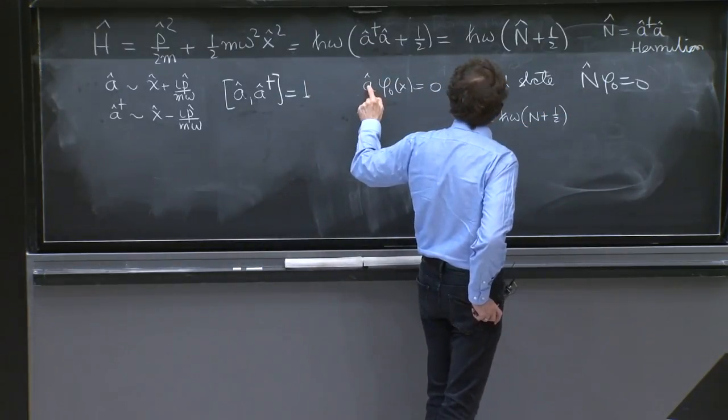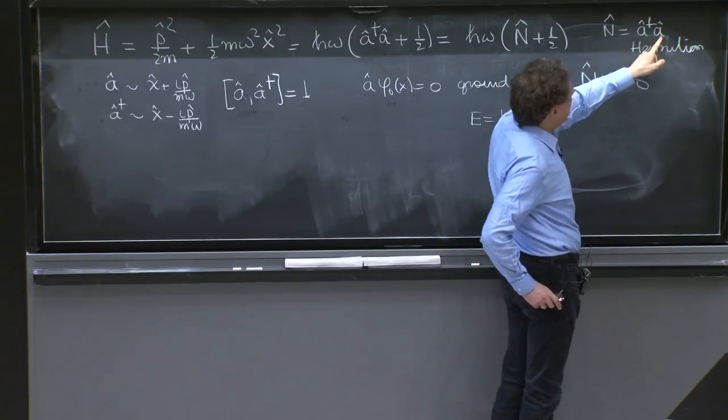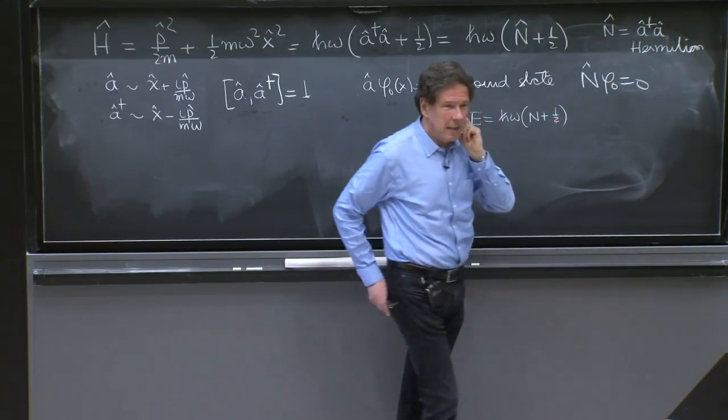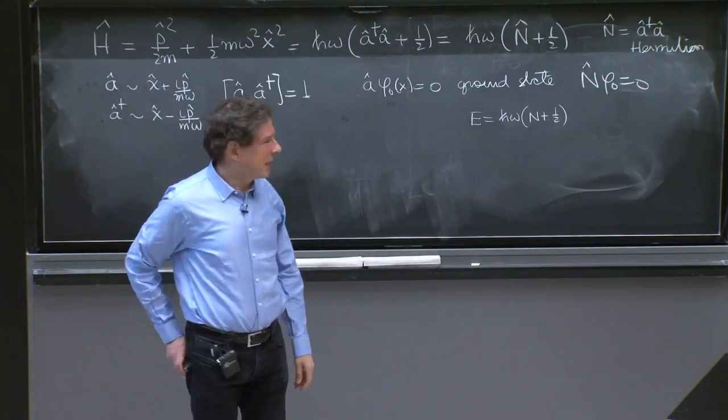And it's killed by a, which means that it's killed by n hat, because a is to the right in n hat. So the a finds phi 0 and just kills it.